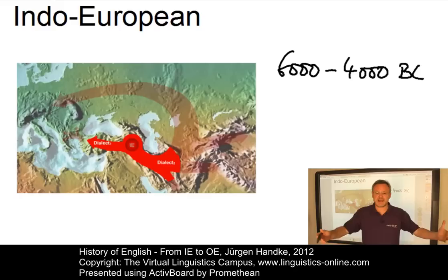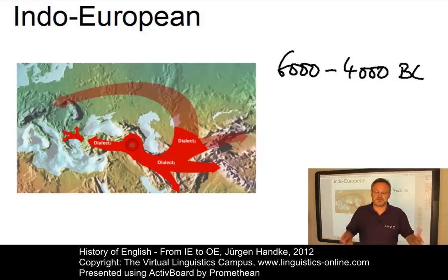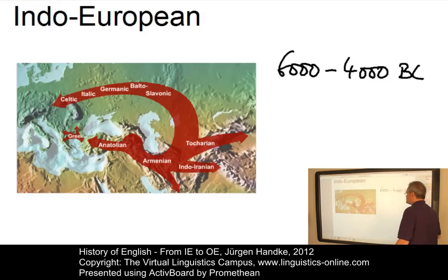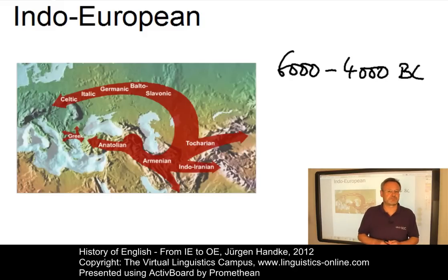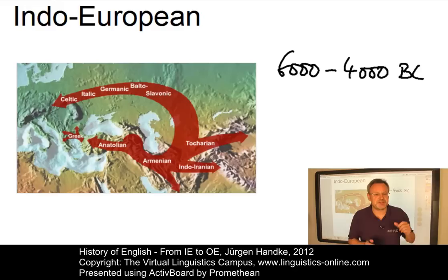New objects and landscapes were discovered, and new words had to be coined. More and more local dialects developed as the migration continued. Eventually these dialects became mutually unintelligible and developed their own status as independent languages. Today the Indo-European language family, which was established by comparative studies in the last decades of the 19th century, stretches from the Hebrides in the West to the Indian subcontinent in the East.